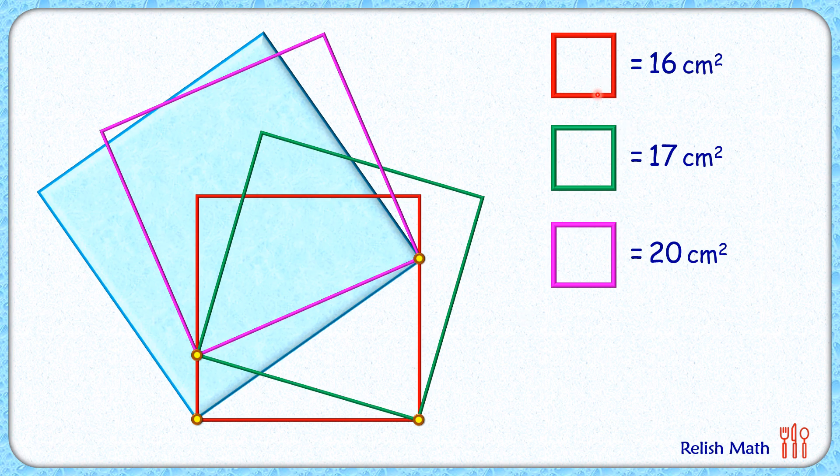As the area of each square is given we can find the side length of each square. For red square the side length will be √16 or 4 cm. For green square the side length will be √17 cm. And for the pink square the side length will be √20 cm.